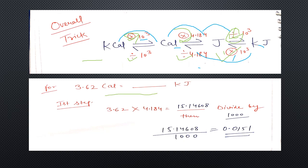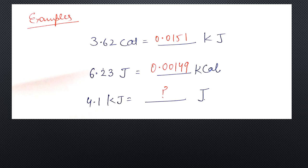Let me discuss one example to make it very clear. We have 3.62 calorie and we have to change it to kilojoule. Since calorie to kilojoule is a forward way, we first multiply by 4.184, giving 15.14608, then divide by 1000, giving the answer 0.015 kilojoule. This is the basic method. Try the next example and comment your answer.